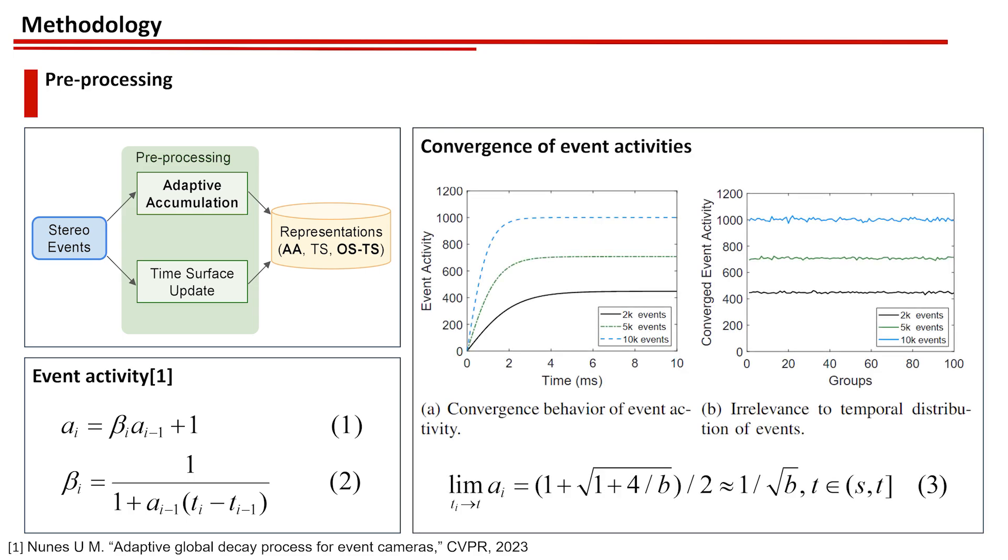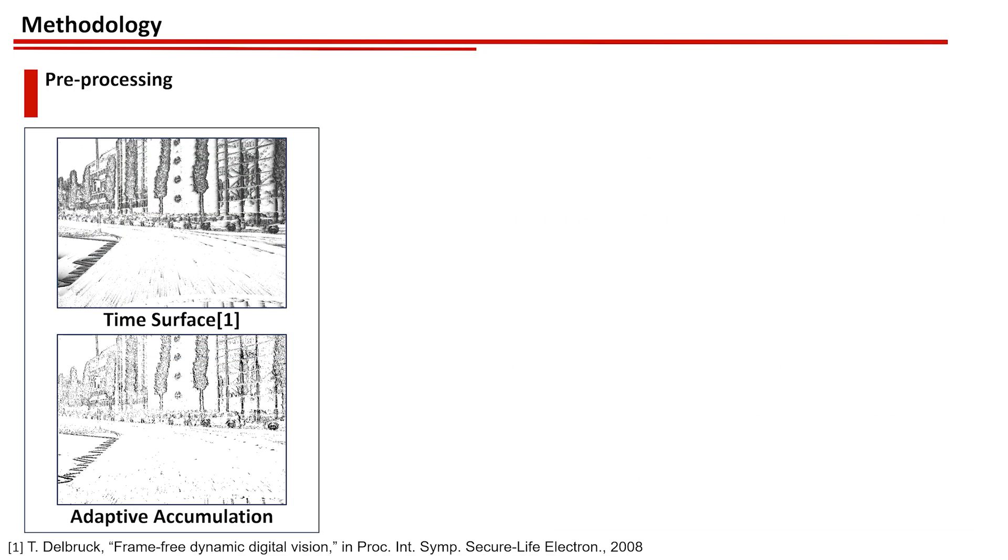When the event dynamic is constant, the event activity will quickly converge to a constant value, as shown in equation 3, where B is the time interval between events. Figure B demonstrates that even when the time intervals between events are uneven, the event activity will still converge. We utilize the convergence property of local event activity to perform independent adaptive accumulation on small regions of the image.